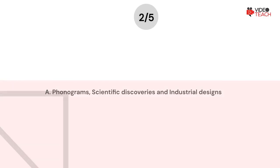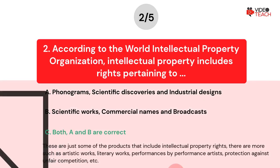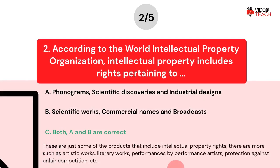The correct answer is Option C. These are just some of the products that include intellectual property rights. There are more, such as artistic works, literary works, performances by performance artists, protection against unfair competition, and others.